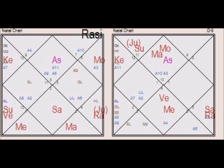If you look at the D9 chart on your screen, his Atmakaraka is the planet Saturn. On the left side is the Rashi chart and on the right side is the D9 or Navamsa chart. His Atmakaraka is Saturn. He was born in Saigon, Vietnam on April 6th, 1944, at 10 PM at night. Based on these birth details, his Atmakaraka is Saturn, and Saturn is placed in his Navamsa chart along with Rahu.